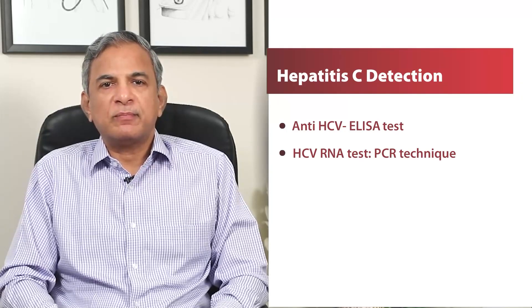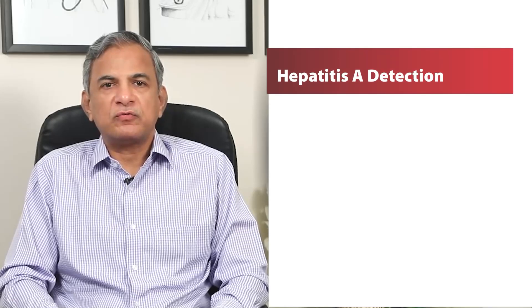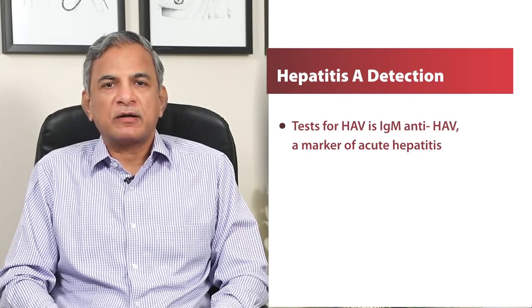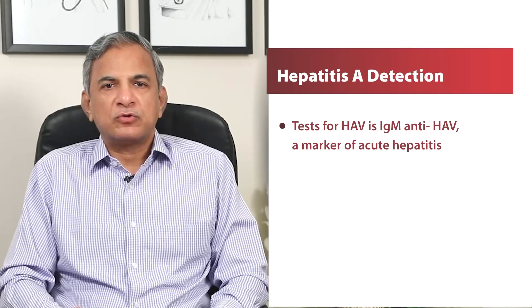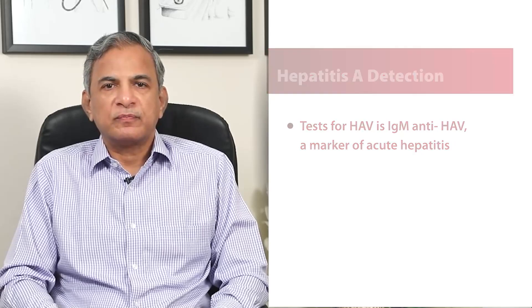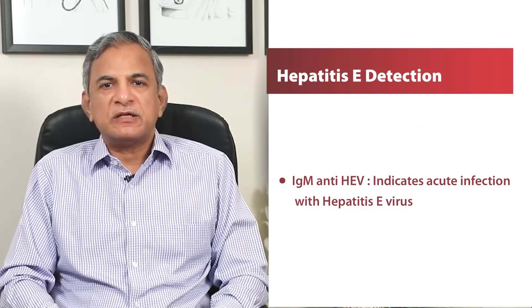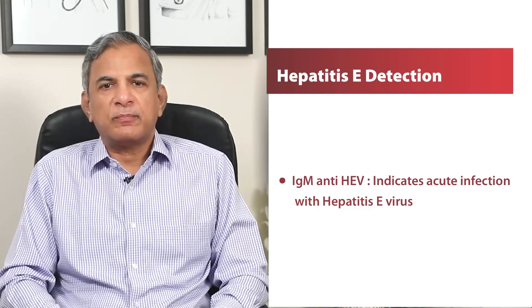Similarly, tests are available for Hepatitis A virus infection, which include IgM anti-HAV, a marker of acute hepatitis, and total anti-HAV, which is a marker of past infection. The E virus has a test called IgM anti-HEV which tells you about the acute infection with the Hepatitis E virus.